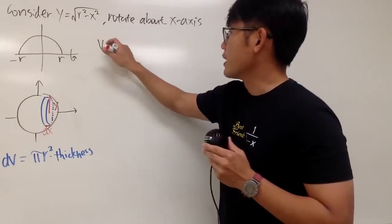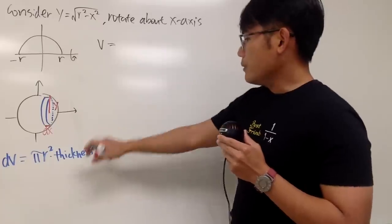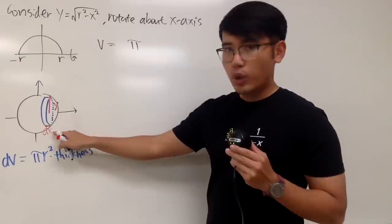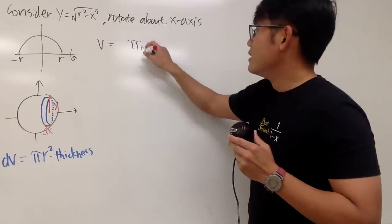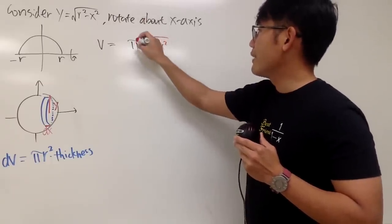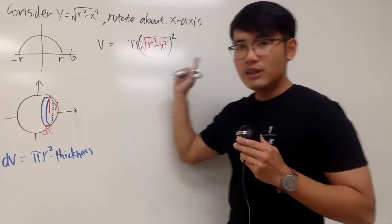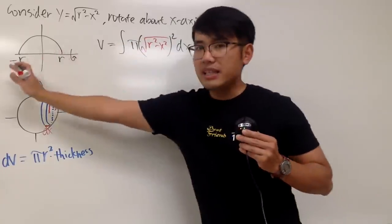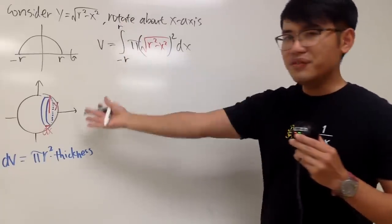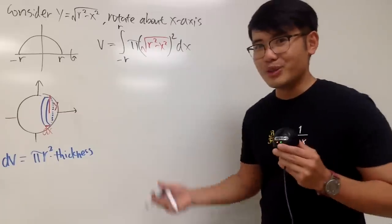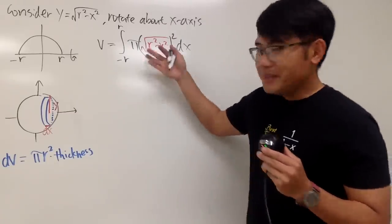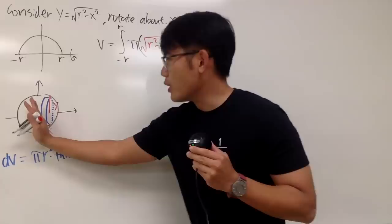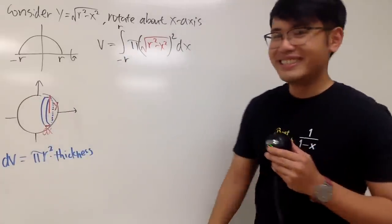Let me put down the volume of the sphere. Well, π is just π. The R is the y, but y is not allowed in the x world, so I substitute in the square root of r squared minus x squared. Don't forget we have to square that, and then we have the dx. We integrate this from negative r to r. Now we can simplify because this is an even function — it's symmetrical left to right — so we can integrate from 0 to r and double the result.